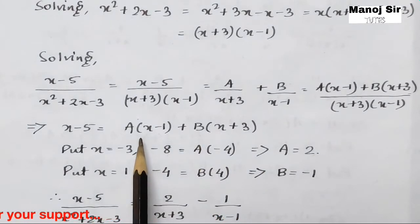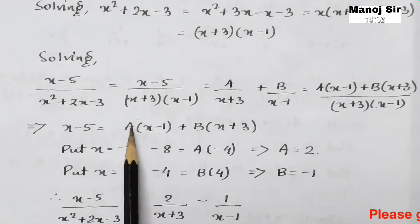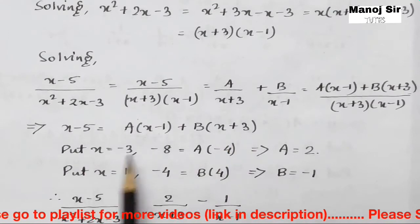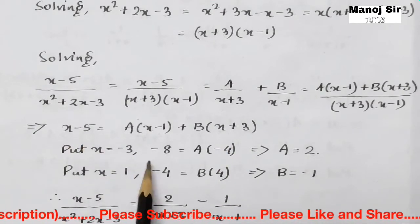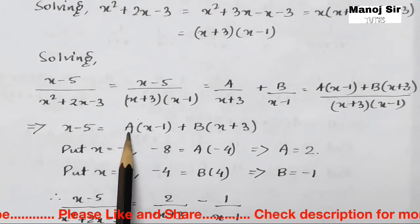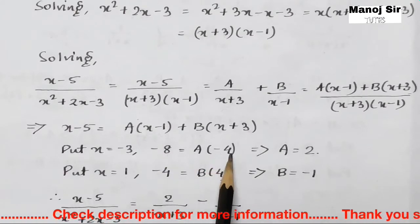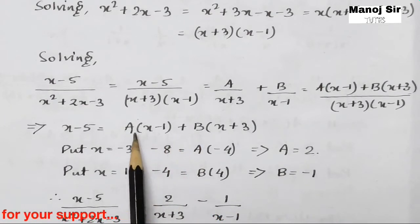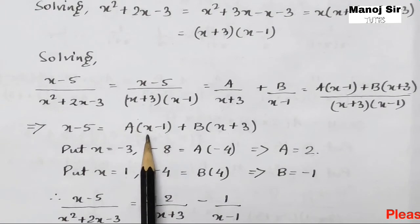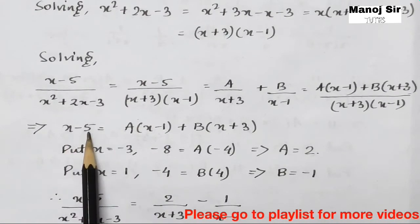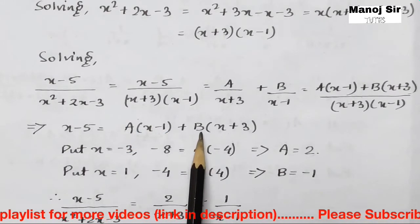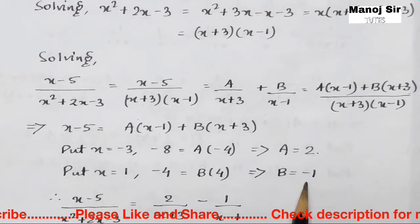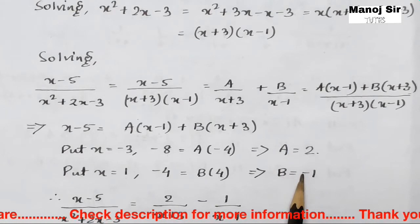To find A, put x = −3 so that the B term vanishes. Then −3−5 = −8 = A(−3−1) = A(−4), giving A = 2. To find B, put x = 1 so that the A term vanishes. Then 1−5 = −4 = B(1+3) = B(4), giving B = −1.